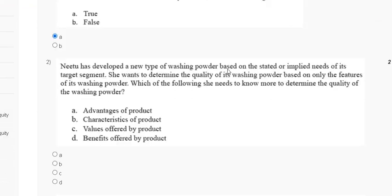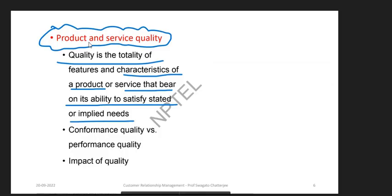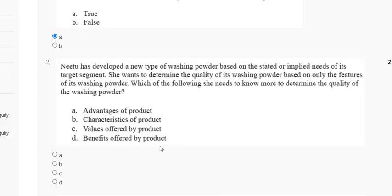Question 2: Nitu has developed a new type of washing powder based on the stated and implied needs of its target segment. She wants to determine the quality of its washing powder based only on the features of the product. The options are: advantage of product, characteristic of product, value offered by product, and benefit offered by product. The explanation is that quality is the totality of features and characteristics of a product. So the correct answer is option B: characteristic of product.